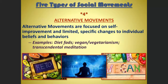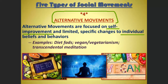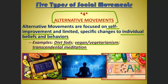Number four is alternative movements, which have gained a lot of traction since the 1980s. They're focused more on self-improvement and making limited, specific changes to individual beliefs and behaviors, but people still come together around these individual changes. Examples include diet fads like the keto diet, veganism or vegetarianism, yoga, and transcendental meditation — things that have more to do with you as an individual changing your behavior, attitudes, or rituals, but where people gather around this self-improvement.